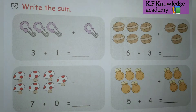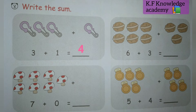Now the next section: write the sum — sum means addition. In this question there are three pins plus one pin, so three plus one is equal to four, we will write four. In the next figure there are six crosses plus three crosses, it means six plus three. We will count six plus three is equal to nine. Another method: we can count all the crosses together — one, two, three, four, five, six, seven, eight, nine — and write the answer nine.